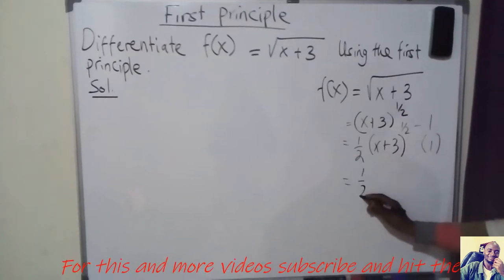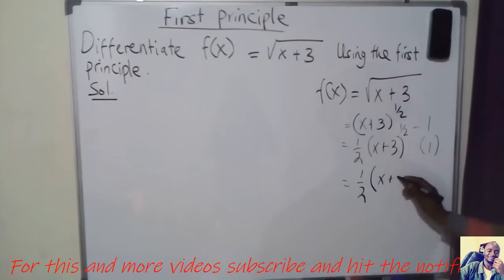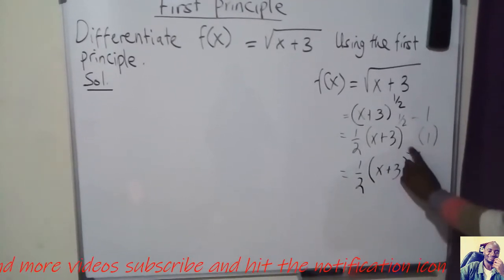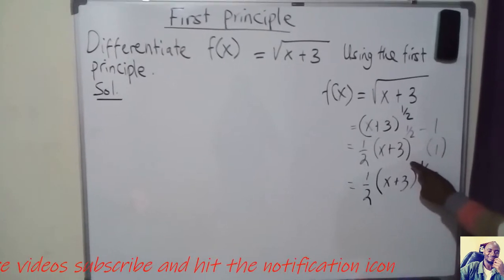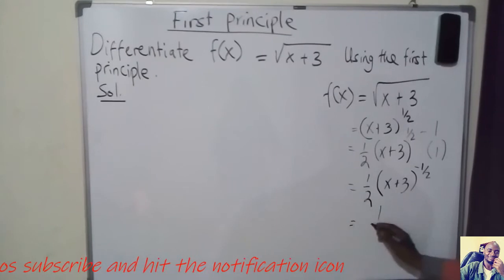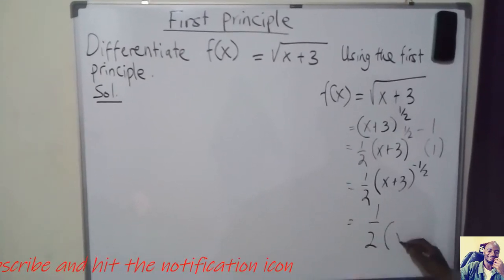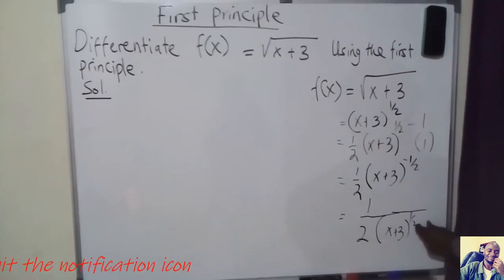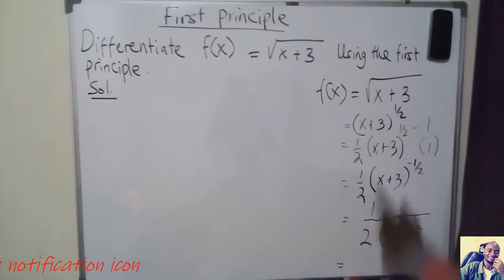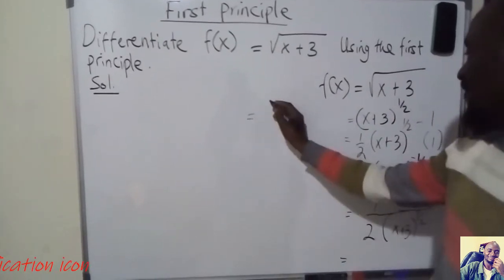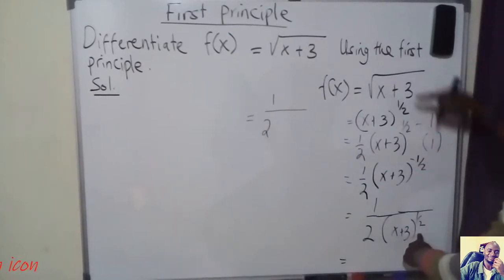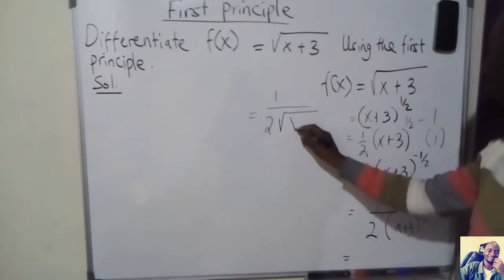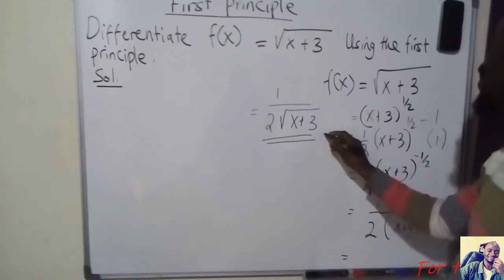This gives us 1/2 times (x + 3) to the power of negative 1/2. Using the negative index, I can bring this term to the denominator so it becomes positive. This gives 1/2 over (x + 3)^(1/2), and since a power of 1/2 means square root, this becomes 1 over 2√(x + 3). This is the result when we use the general form.